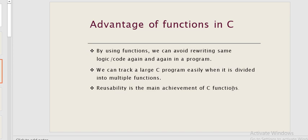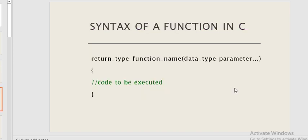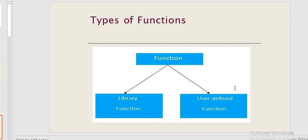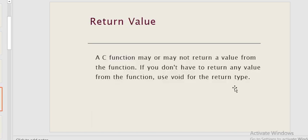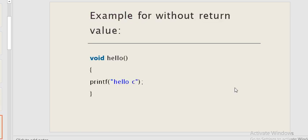Next we explain C functions. The main achievement of C functions includes user-defined functions and built-in functions. A C function may or may not return a value. If you don't return a value from a function, use void as the return type. Void means empty. An example of a function without a return type uses void, meaning no return value is given.